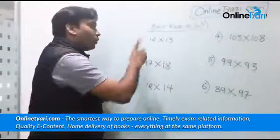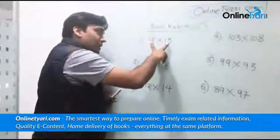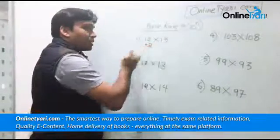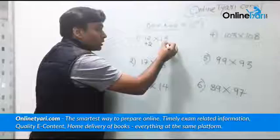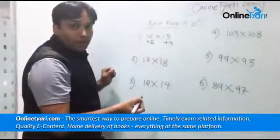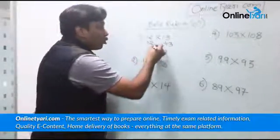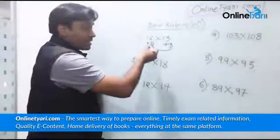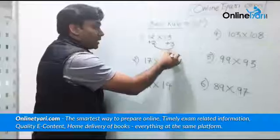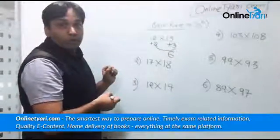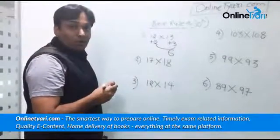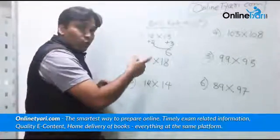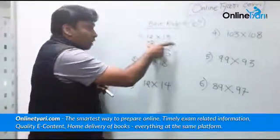Now we will consider our base. This number 12 out here is 2 more than the base number, and this number 13 is 3 more than our base number. What are we gonna do with these base numbers, or say excesses? I'm going to multiply 2 and 3. If I multiply 2 and 3, what is that I'm going to get? I'm going to get 6 out here, right? So what did you do with excesses? You have got the product out here.